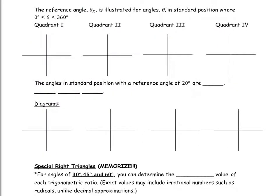We're going to draw a reference angle for an angle in standard position in each of the four quadrants. For an angle that terminates in quadrant one, since those angles are already less than 90 degrees, the angle itself and the reference angle are actually the exact same angle.